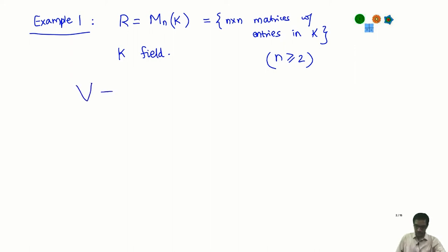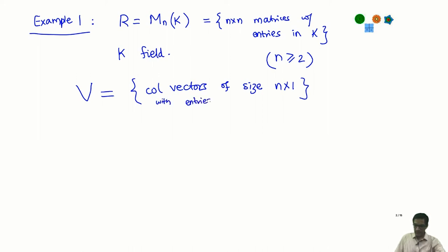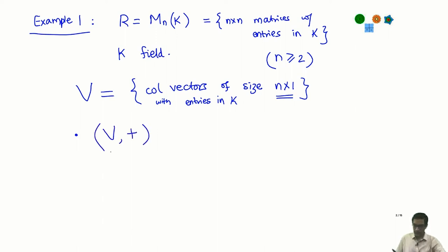Let V be the set of all column vectors of size n×1 with entries in K. Column vectors are just matrices of size n×1. This is firstly an abelian group, and I want to claim that I can make this into a module over the ring R.